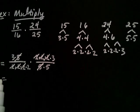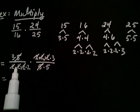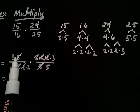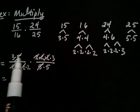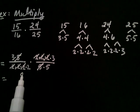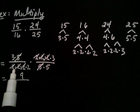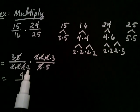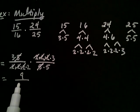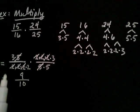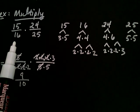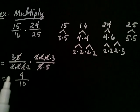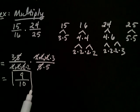Now once you've done all your cancellation, then what you do is you simply multiply across. So three, and what's left? Another three. So three times three is nine in the numerator. And in the denominator, well I have that two still there, so two times five, which is ten. So 15 over 16 multiplied by 24 over 25 is the same thing as 9 tenths.